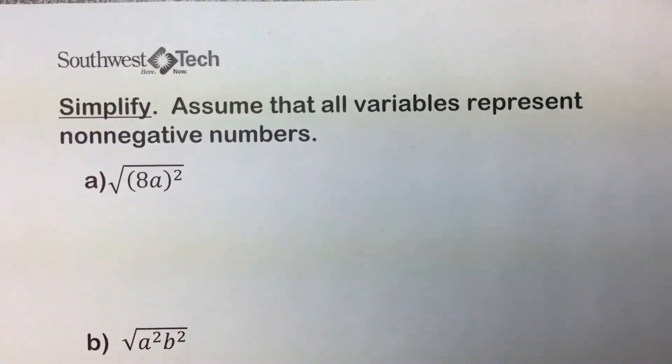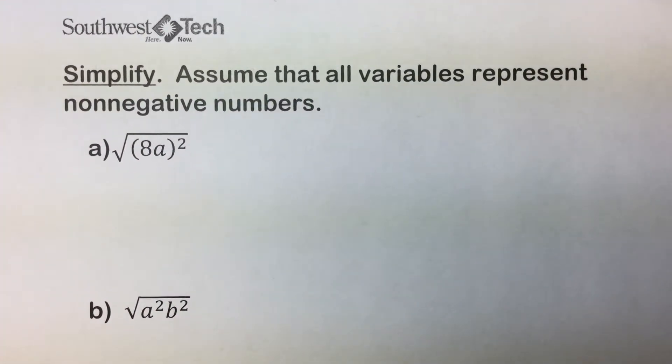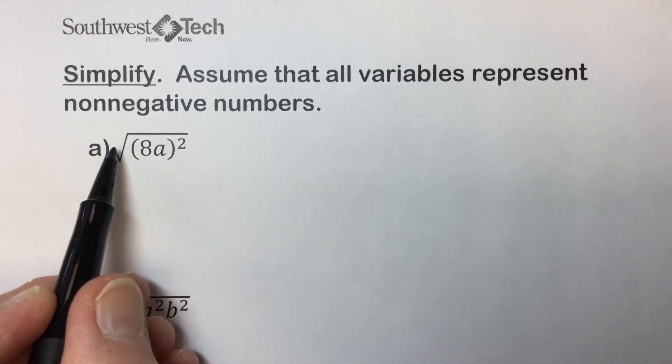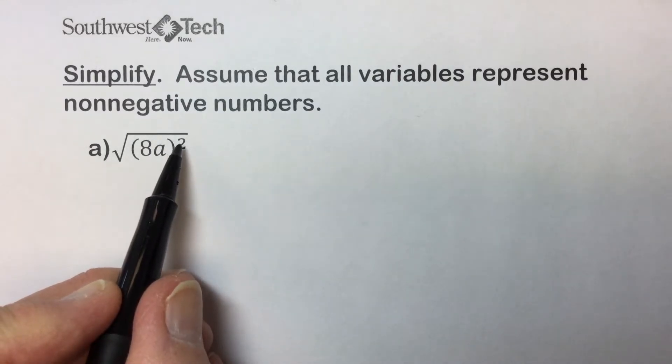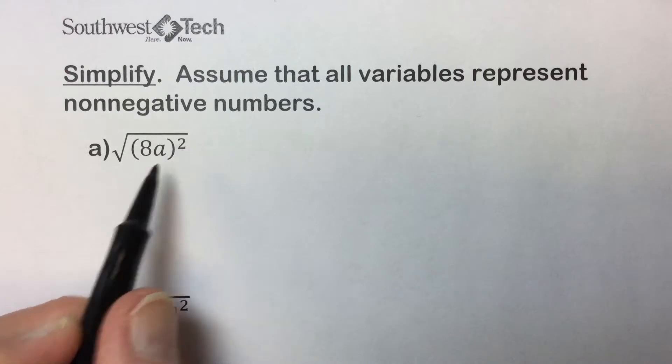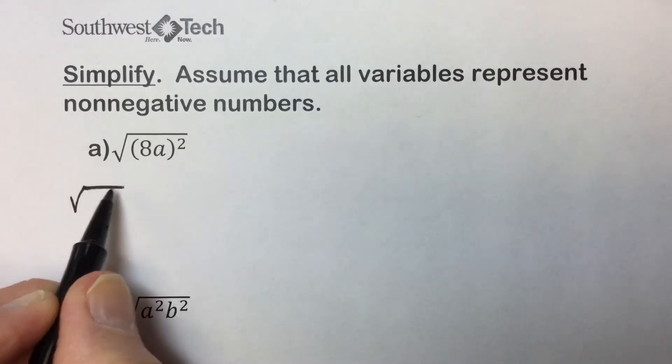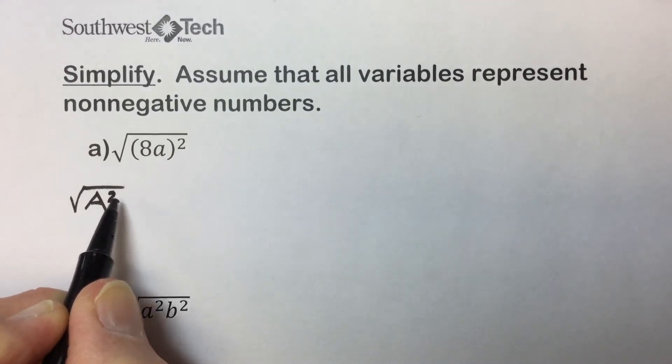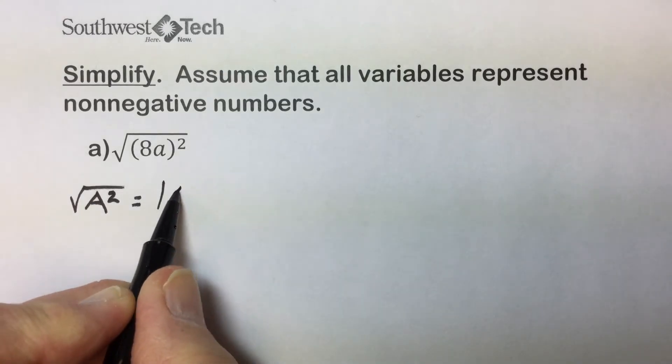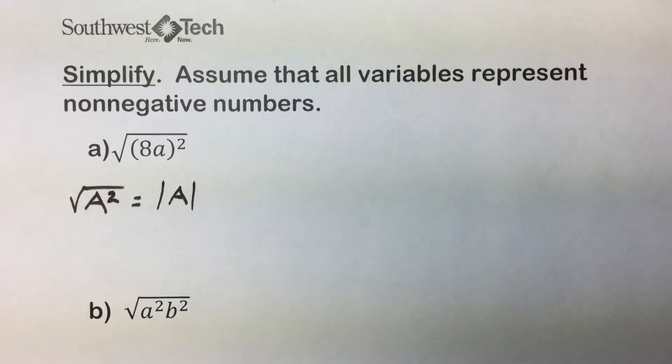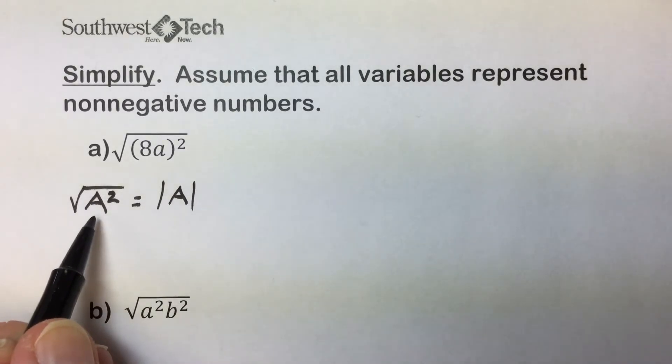Let's use that to simplify the following. It tells us, assume all variables represent non-negative answers. Here we have a quantity underneath the radical that is squared. That principle that we just had, if you have a quantity squared, it's equivalent to the absolute value of that variable underneath the radical, or the term underneath the radical.